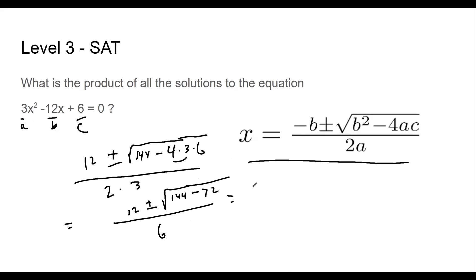All right, now 12 plus or minus the square root. Now I've got to do 144 minus 72. I don't trust my brain. So I'm just going to go to the side over here and subtract. All right, and I get 72. All right, now all over 6.